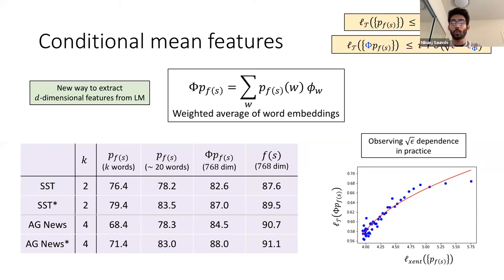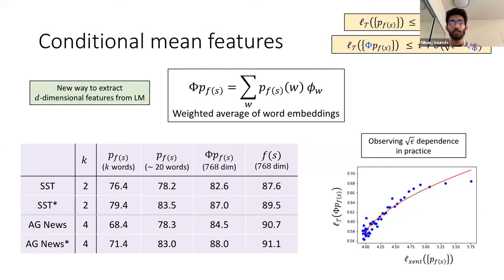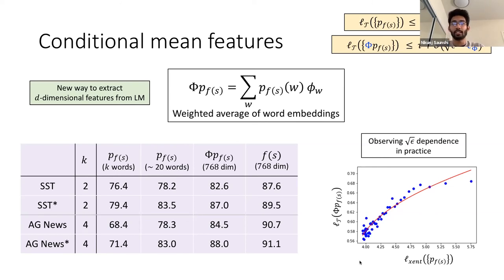You can do this for other classification tasks as well. AG News is a task where you have news articles categorized into one of four categories: science, news, business, and sports. Again, you can add a prompt like 'This article is about [blank]' and try to complete it. The pattern is the same: probabilities do quite well, much better than random performance; conditional mean features are pretty close to the actual features; and you see a large boost in performance — almost 3.5% — if you add a prompt. We also verify the square root epsilon dependence by plotting cross-entropy of the language model on the x-axis against logistic regression loss on the downstream task for conditional mean features, and it's somewhat of a square root relationship.